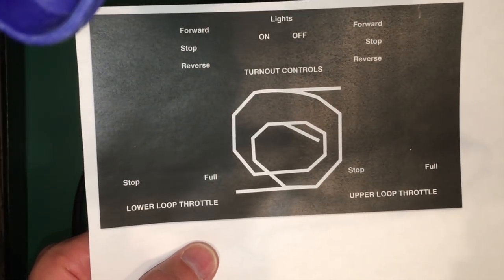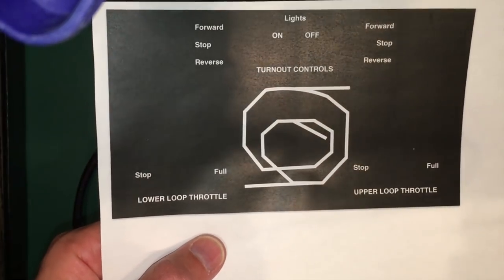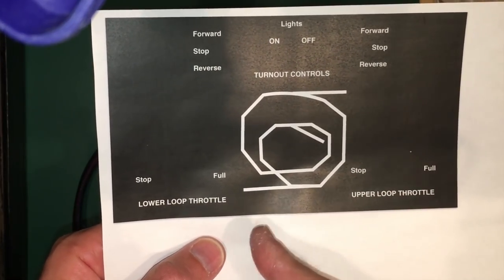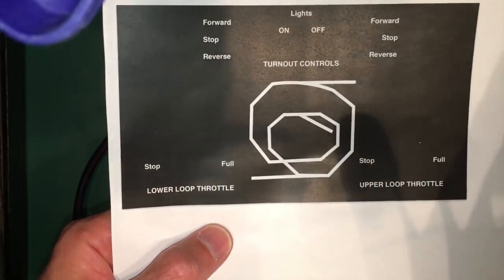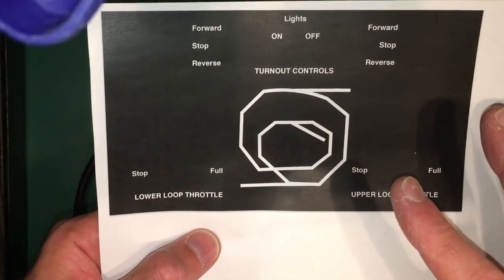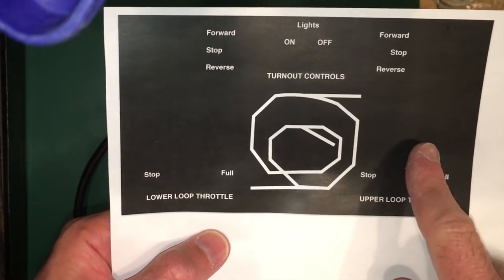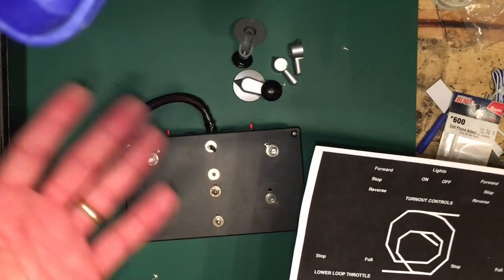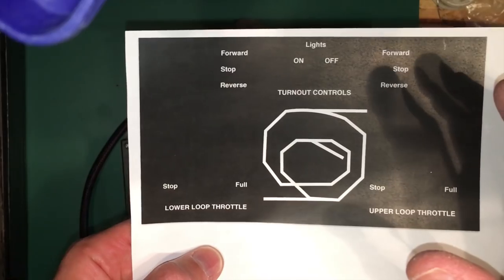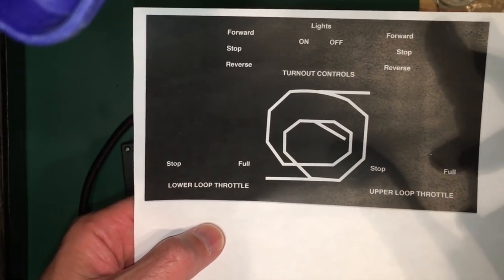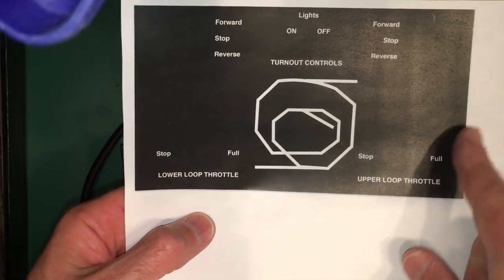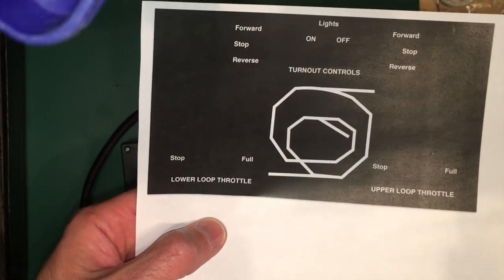I used a word processor program to create labels for my control box. I made a small track diagram where the turnout controls will poke through. This was a trial and error process. I originally did this with black lettering on white until I got everything to line up just right. Once I had everything set up the way I wanted, I changed all the lettering to white and put a black background on that portion of the paper. Then I printed this out on a full label sheet.